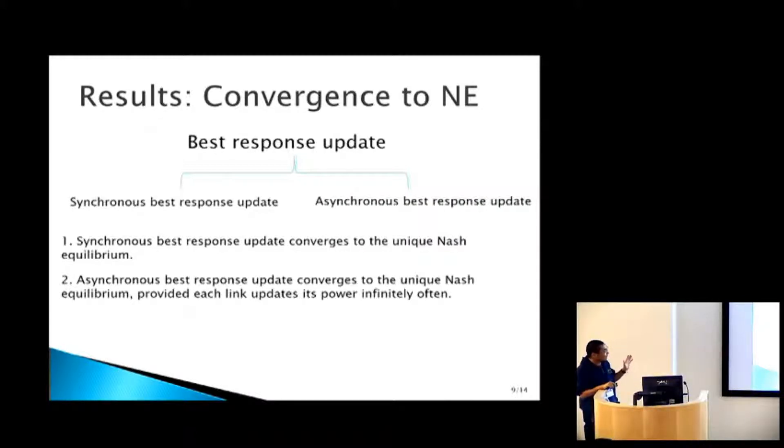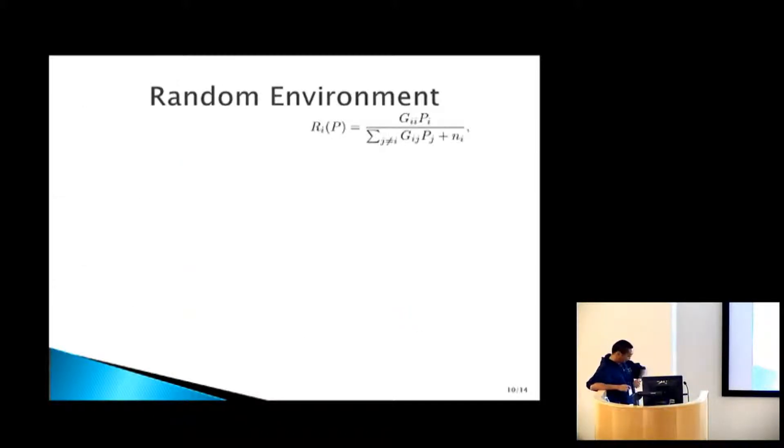You can show that synchronous best response update converges. Asynchronous best response update also converges, provided they update infinitely often. I want to clarify, based on my description of best response update, it's a little bit misleading. It sounds like everybody needs to know what everybody else's power is in the previous iteration. But that's not the case, because all transmitter I needs is this aggregated piece of information, which it's able to get from the receiver. The receiver can sense the signal to interference ratio. All it really needs is to send that signal to interference ratio back to the transmitter, as opposed to accessing everybody's power.